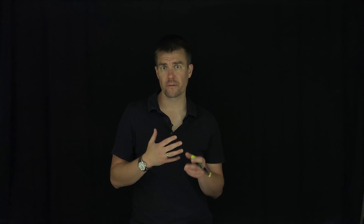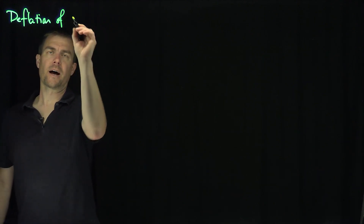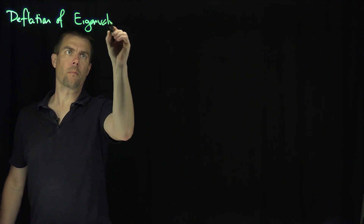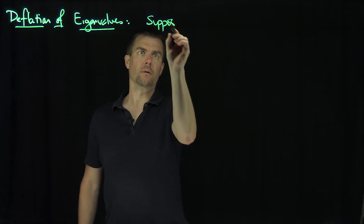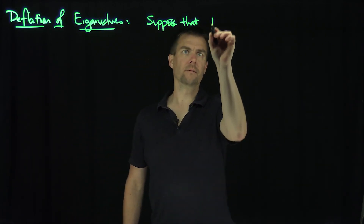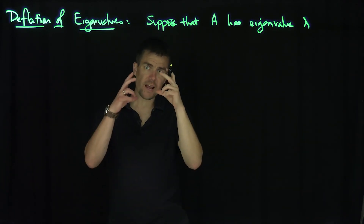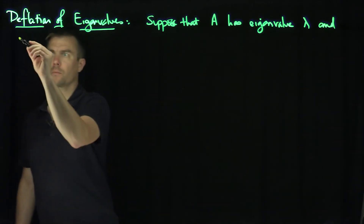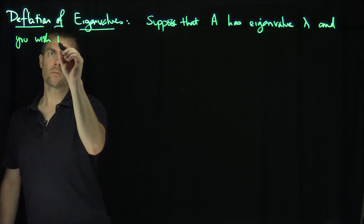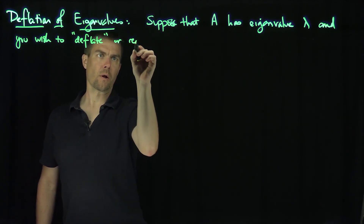Hello, students. In this video, we'll discuss the idea of deflating a matrix to reduce one of the eigenvalues to an arbitrary value. This is deflation of eigenvalues. The idea is that suppose A has eigenvalue lambda, which may be the largest eigenvalue, and you wish to zero it out — to deflate or reduce lambda.